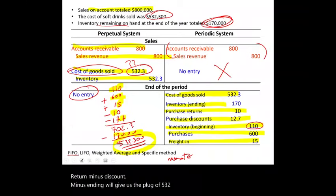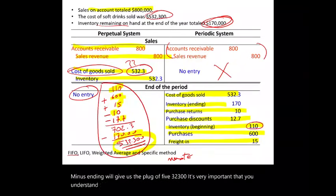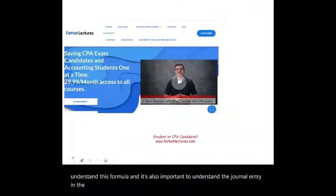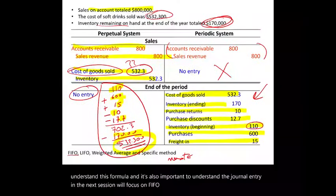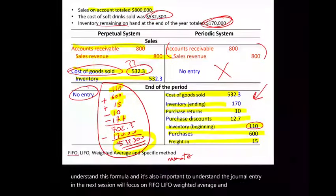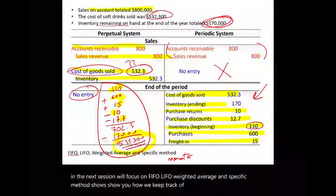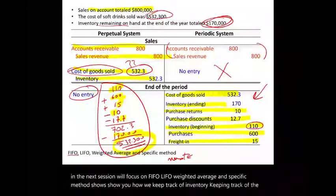It's very important that you understand this formula and the journal entry. In the next session, we'll focus on FIFO, LIFO, weighted average, and the specific identification method, showing how we keep track of inventory cost flow.